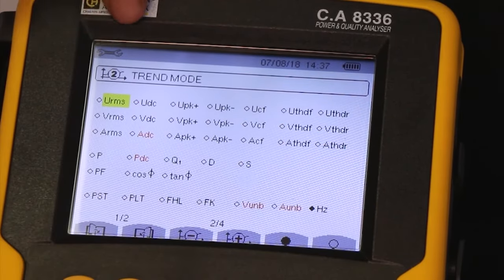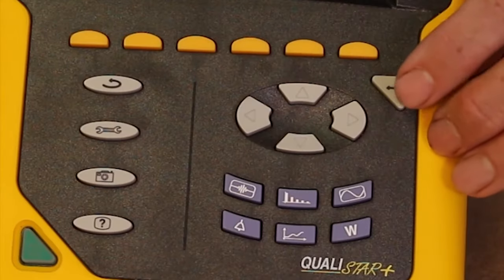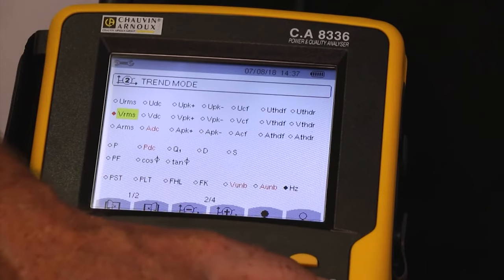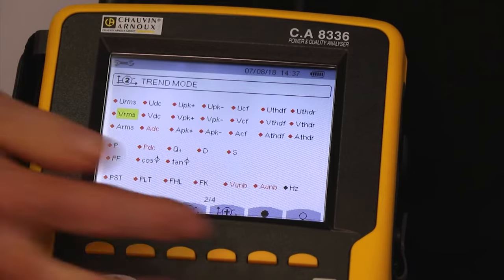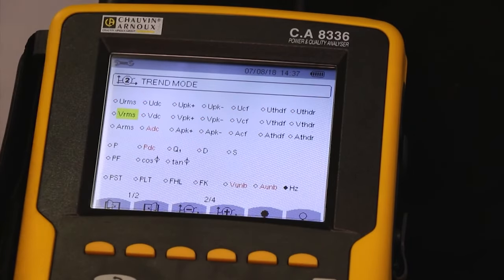Moving along to trend 2, if I was only interested in voltages and not currents, it's easy to select or deselect each parameter I want. Additionally, this key can be used to select every parameter, and this one to deselect every parameter.